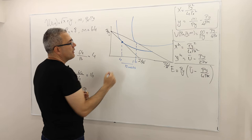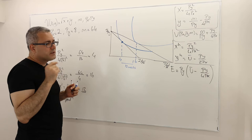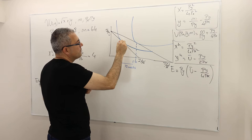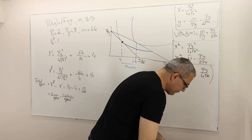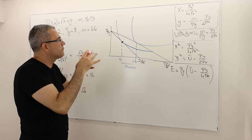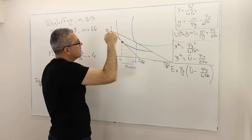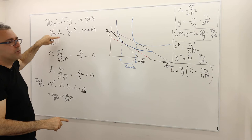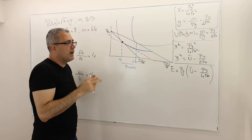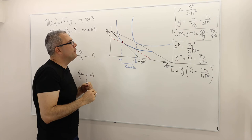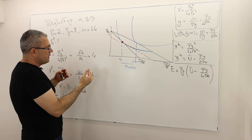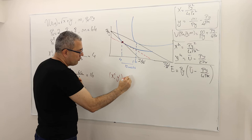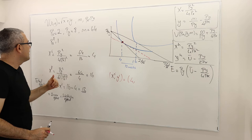In order to find the substitution and income effects, Slutsky does the following: look at the bundle under the new price regime. The price ratio is going to be the same as the new price regime — meaning two to one. So the dotted red line is the hypothetical budget line, but it has to pass through the initial optimal point. Remember, initially X_initial and Y_initial: X_initial equals 4.